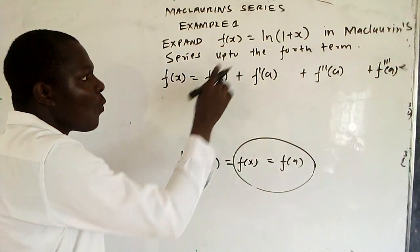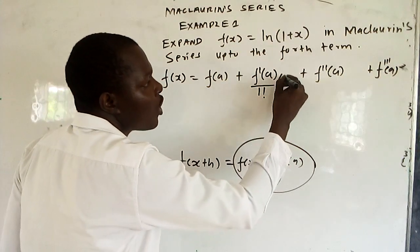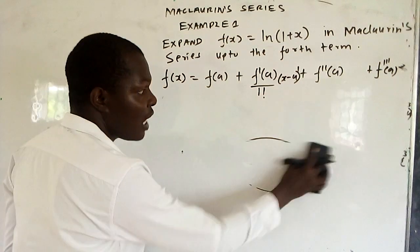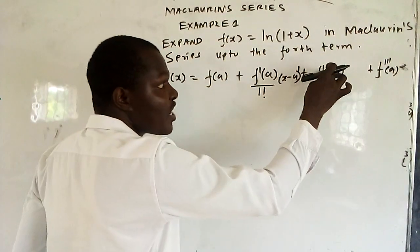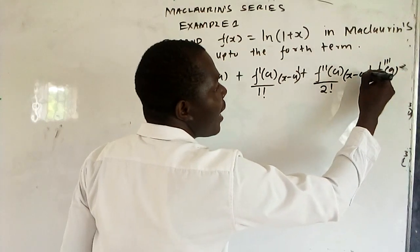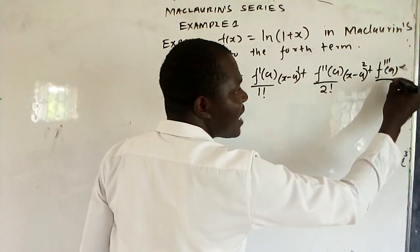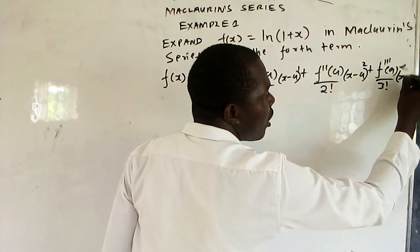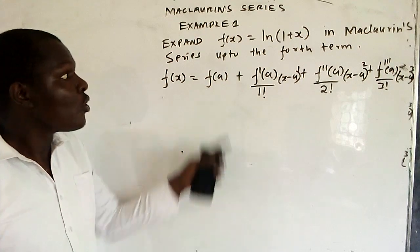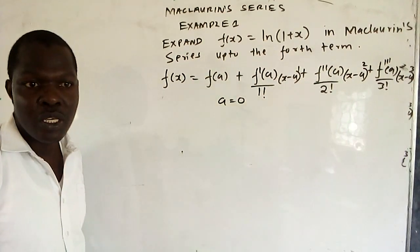When you differentiate it for the first time, it means it is over 1 factorial, then x minus a raised to the power 1. If you differentiate it for the second time, it is over 2 factorial, then x minus a raised to power 2. If you differentiate it for the third time, it is over 3 factorial, then x minus a raised to power 3. The Maclaurin series is at the point when a is equal to zero.